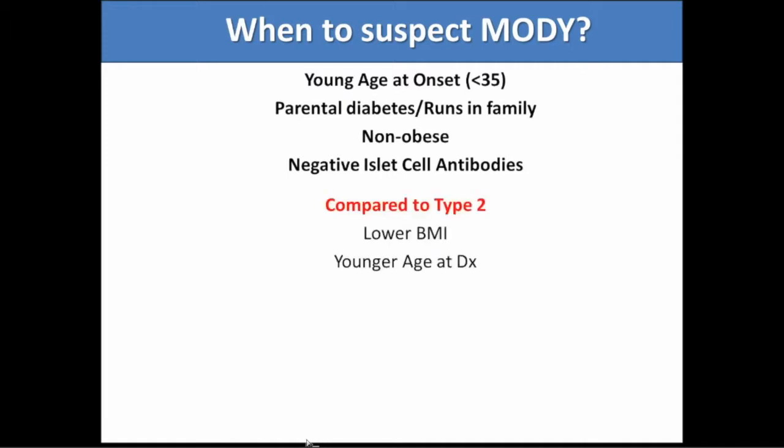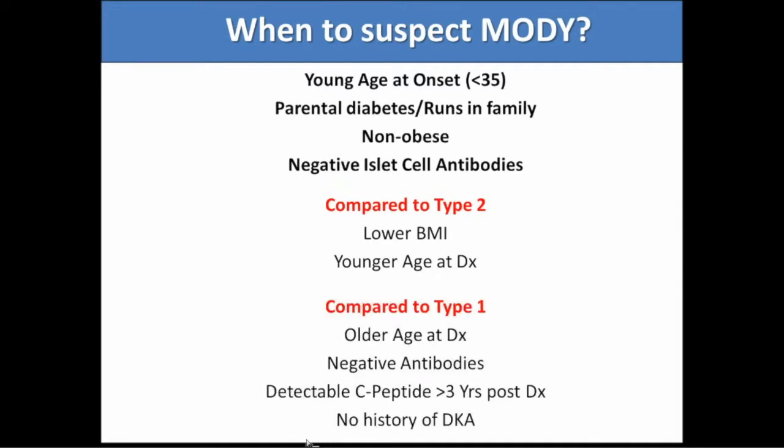You can think of MODY as not quite type 1, not quite type 2: compared to type 2, patients are typically leaner and younger; compared to type 1, they're typically a little older, have negative antibodies, have C-peptide still present after 3 years from diagnosis, and typically have no history of DKA. But nothing's absolute, so it's not always obvious.